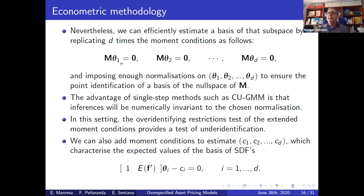This is a standard GMM system, linear in parameters. Different parameters appear in different moment conditions, but they're linear, making this very simple to estimate. Associated with it is an over-identifying restriction test, which can be understood as an under-identification test. The intuition is that if there is point identification, these additional moment conditions will not be satisfied and the test will reject.